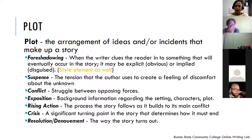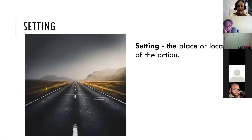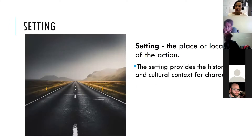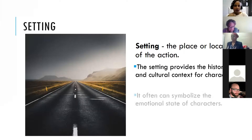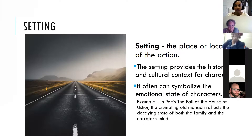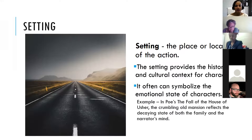These plot elements are all things you might focus on in literary analysis — what does it mean that the story ends that way? What does it reveal about the character that he or she does a particular thing in that moment of crisis? The setting is sometimes ignored as just a backdrop, but it definitely influences the significance and importance of what's taking place. You might look at what effect the setting has — what difference does it make if it's a dark and gloomy night versus a bright and sunny day? An example thesis focusing on setting: 'In The Fall of the House of Usher, the crumbling old mansion reflects the decaying state of both the family and the narrator's mind.' That's an example of looking at the setting of a story and arguing that it connects to what's going on with the characters.